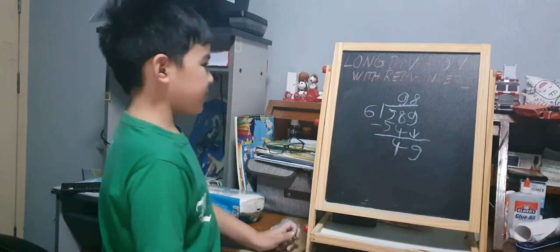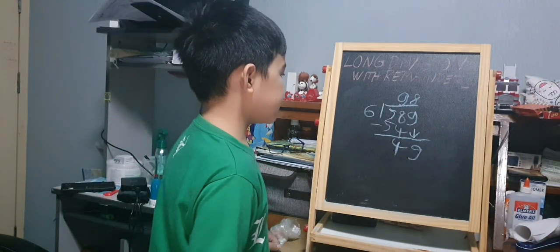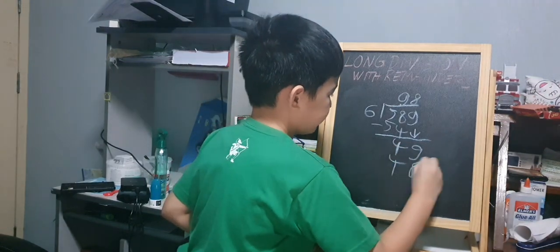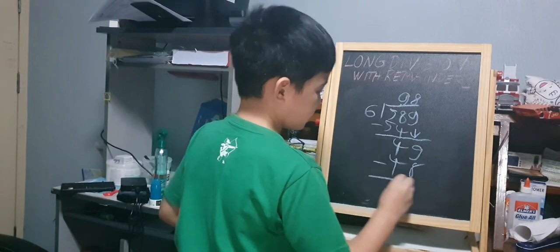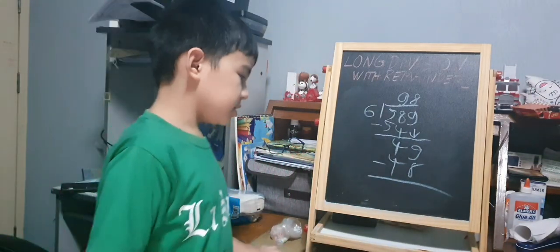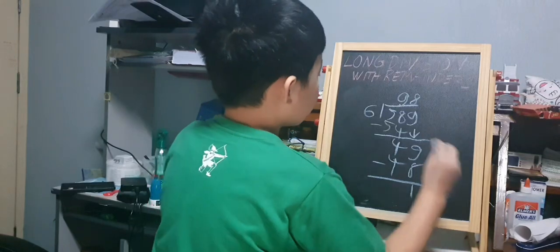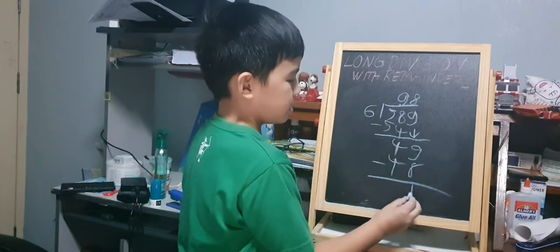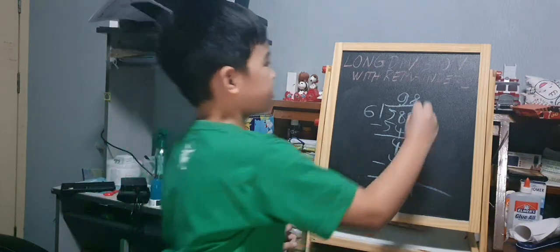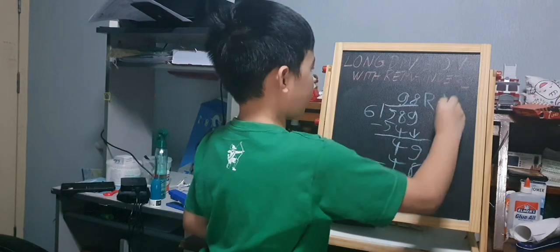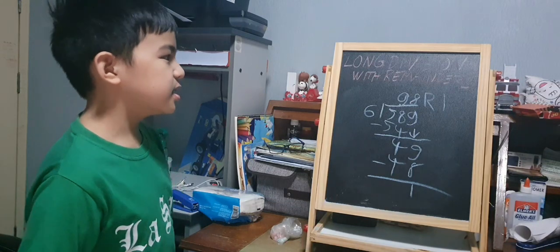Then we multiply again. 8 times 6 is 48, so we will put 48 under 49. Then we will subtract again. 49 minus 48 is 1. Now, there are no more numbers to bring down, and the number 1 is smaller than 6, so it is a remainder. We put R beside 8, then put 1 beside R. The answer to 589 divided by 6 is 98 remainder 1.